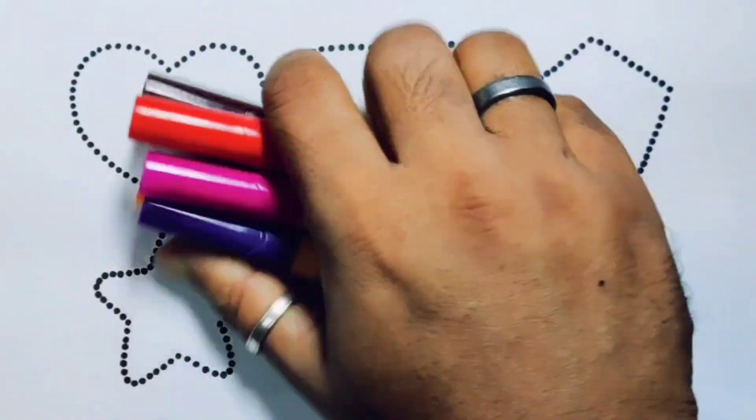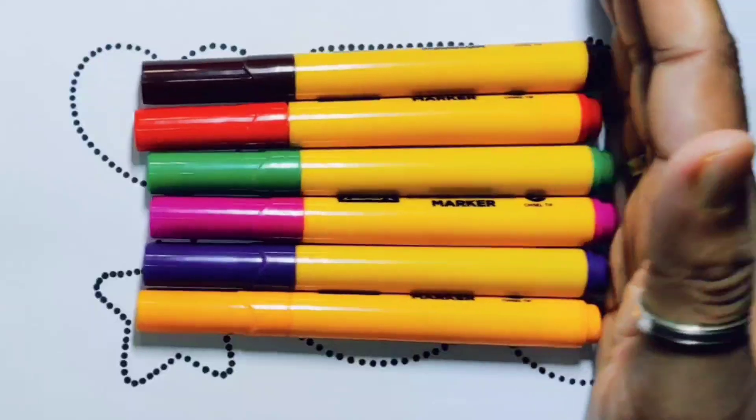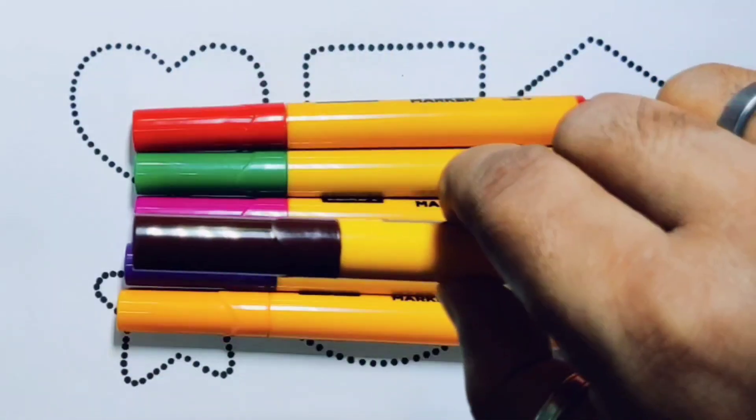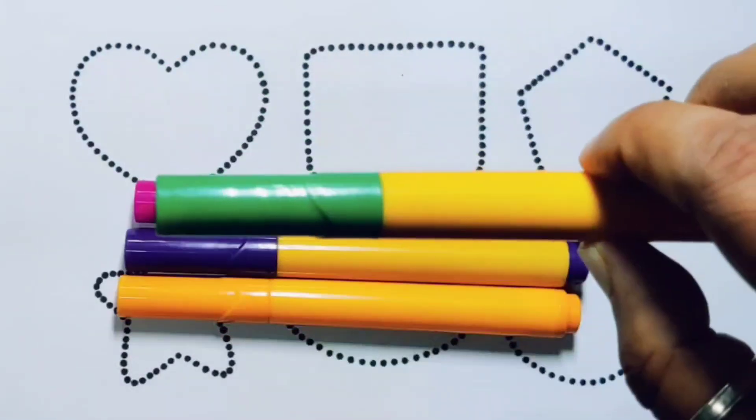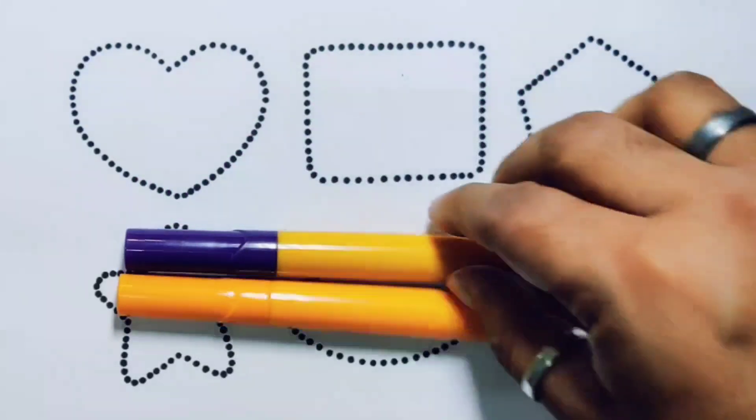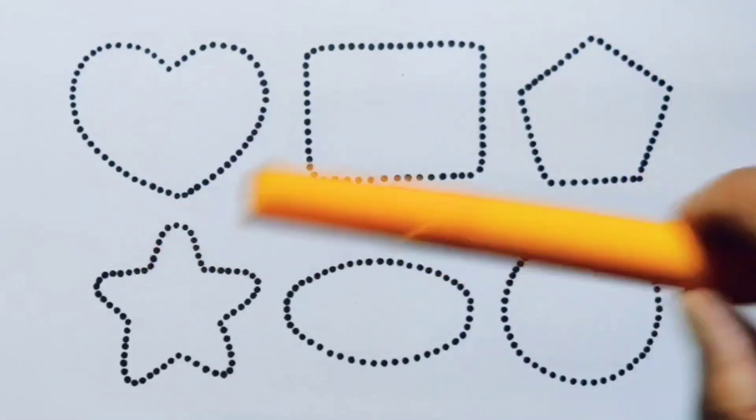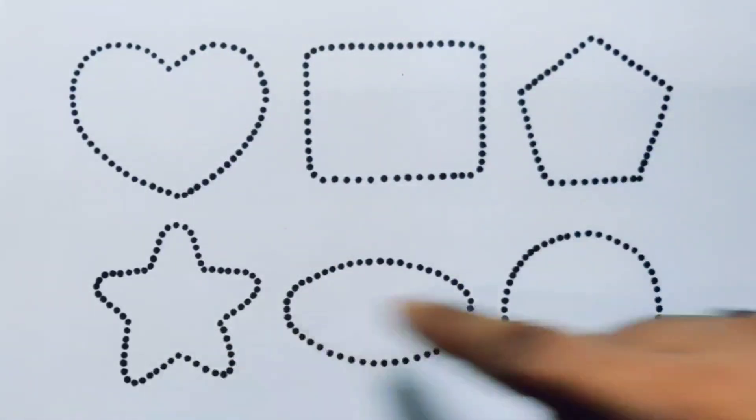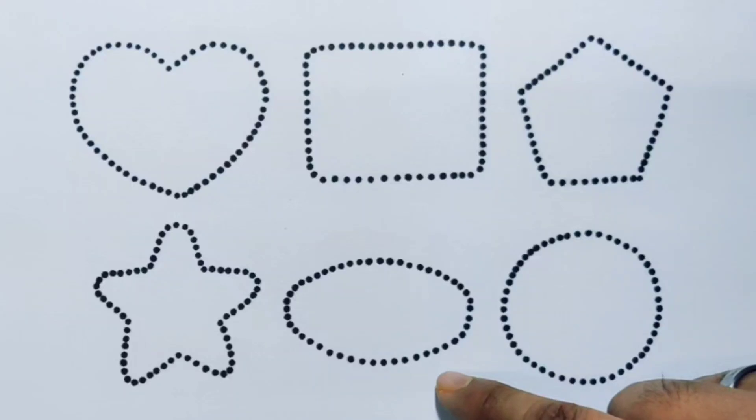Hello kids, welcome to my new video. First, you're going to know the color names: chocolate color, red color, green color, pink color, purple color, orange color, black color. Now let's learn the 2D shapes: heart, rectangle, pentagon, star, oval, and circle.